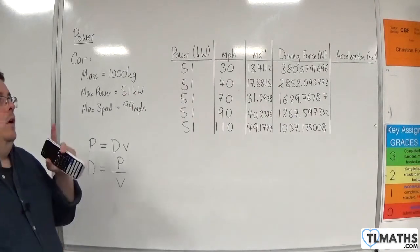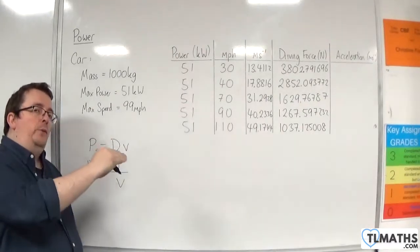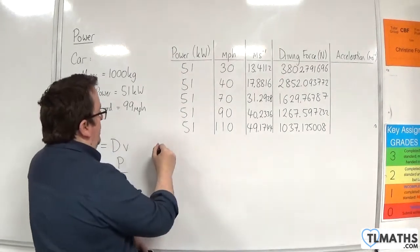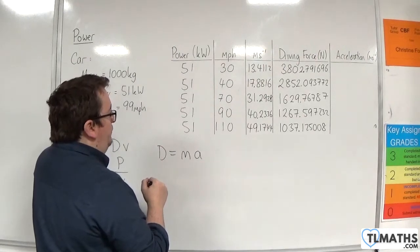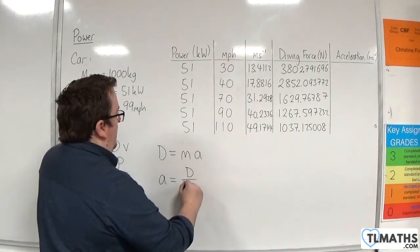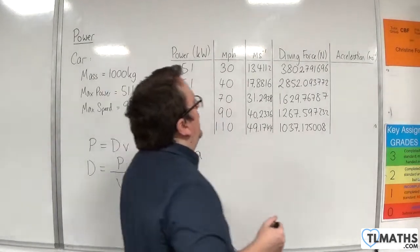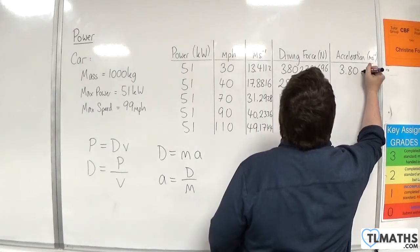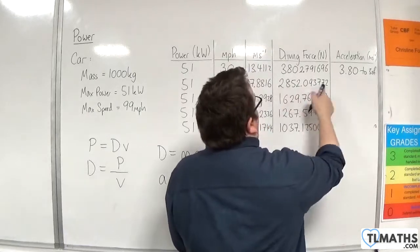That's my only force that's going horizontal. We've got F equals MA, Newton's second law, and that will be our driving force is equal to the mass times the acceleration. So the acceleration will be the driving force divided by the mass. Now, the mass in this case is 1,000, so the acceleration here will be 3.80 to 3 sig fig. Dividing that one by 1,000, we're going to get 2.85 to 3 sig fig.